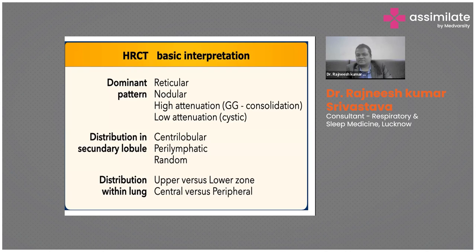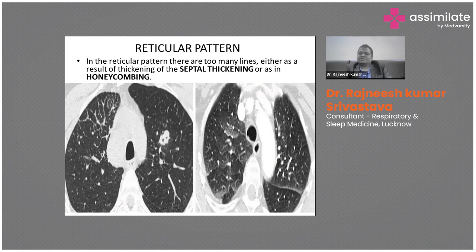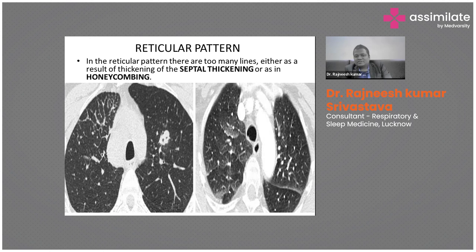The reticular pattern is the predominant pattern in interstitial lung diseases. Reticulation occurs when there are too many lines, either due to septal thickening or honeycombing. On CT scan there are multiple visible lines forming this reticular pattern. In another X-ray, reticular patterns were present alongside a mass — that patient was diagnosed with lymphangitis carcinomatosa, where malignancy spread through lymphatics caused the reticular pattern. Another patient had cardiogenic pulmonary edema producing a similar reticular appearance. CT alone does not clinch the diagnosis.